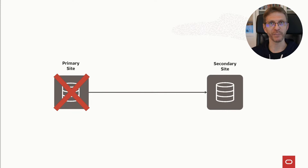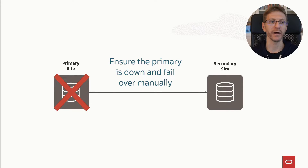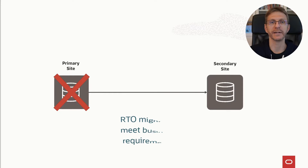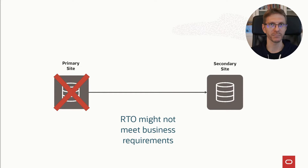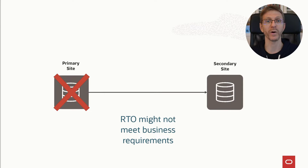But if you have a failure of the primary database, you will need to detect the failure, alert your DBA, have the DBA connect and verify the status of the primary database, and do a manual failover to the secondary site. This requires a lot of time — sometimes it might require hours. And if your business is really important, you really want to lower your RTO. So this is one big point.